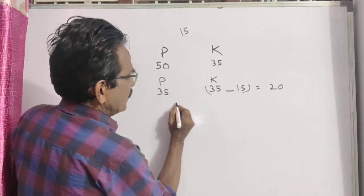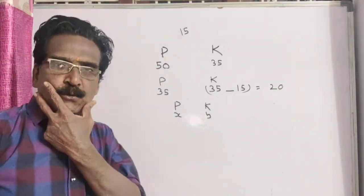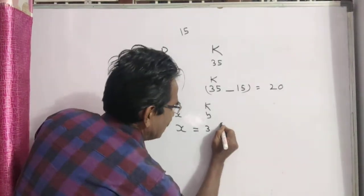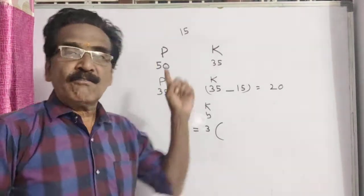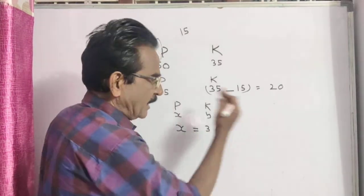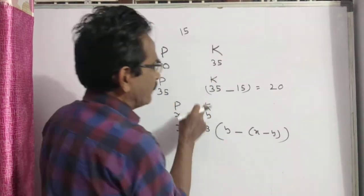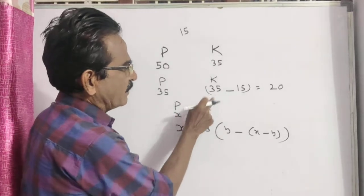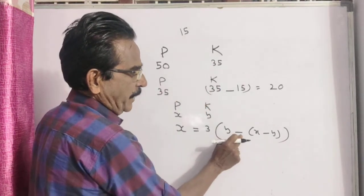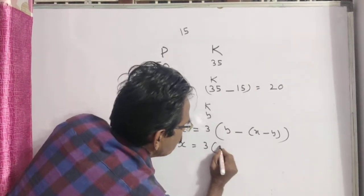Now let us come to our problem. Say Parag is X years and Kalyan is Y years. Parag said to Kalyan, 'I am thrice as old as you were.' When Parag was at the age of Kalyan, Kalyan will be Y minus (X minus Y). So X is equal to 3 into (Y minus X plus Y), that is 3 into (2Y minus X).